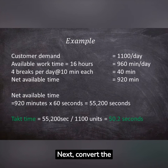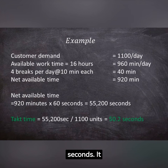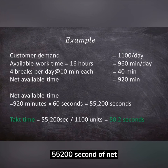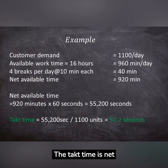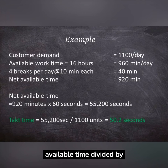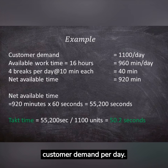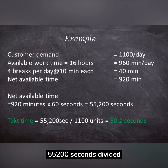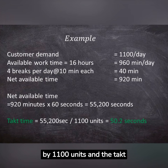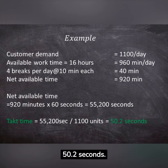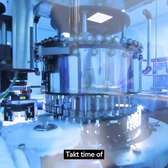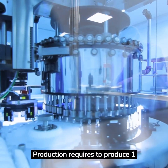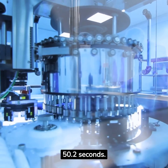Next, convert the net available time into seconds, giving us 55,200 seconds of net available time. The TAC time is net available time divided by customer demand per day. So, 55,200 seconds divided by 1,100 units gives a TAC time of 50.2 seconds. This means production is required to produce one unit of product every 50.2 seconds.